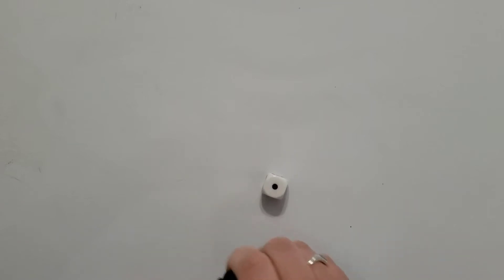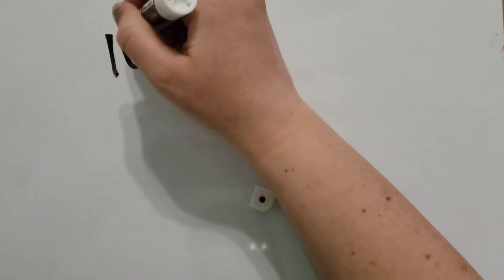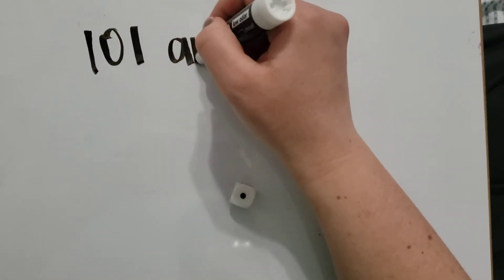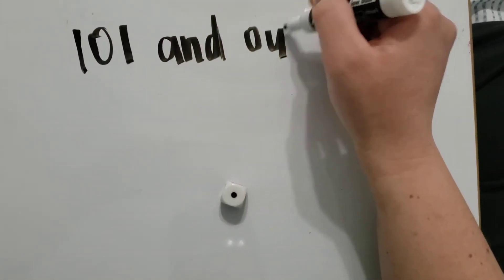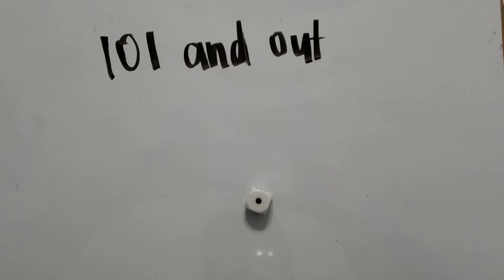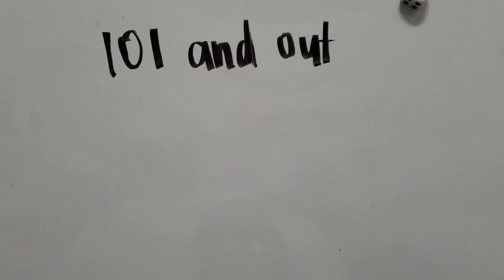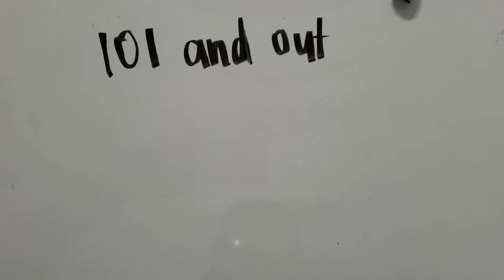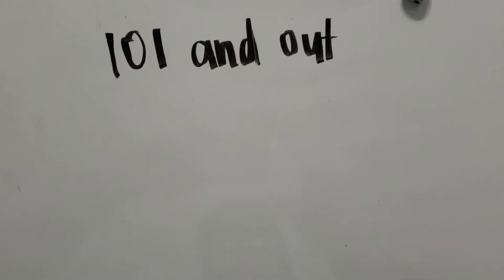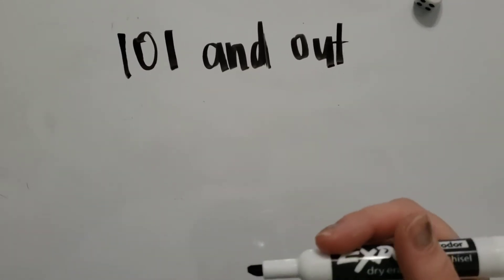So this game is called 101 and Out. In 101 and Out, the purpose of the game is to be able to get to the closest to 100. But if you reach the number 101 or higher, then you're out of the game and you lose.